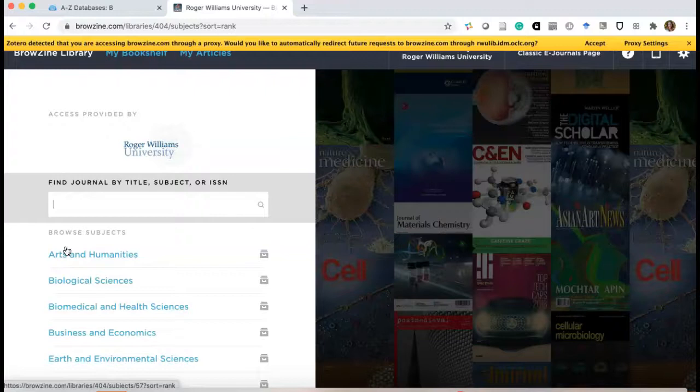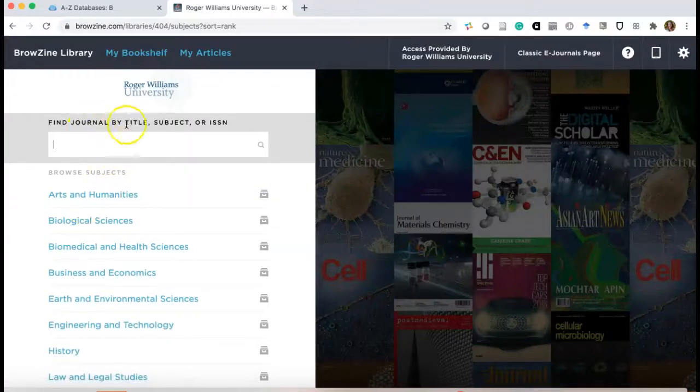Let me show you how you can search in Browzine, either by journal title or subject. So we don't want to put keywords into this search box. If my subject or discipline, or my area of studies, or my major, sometimes it's helpful to think of it that way.